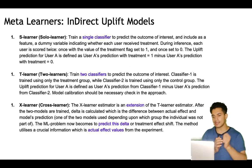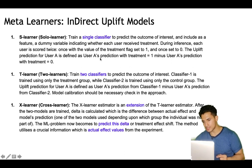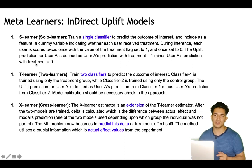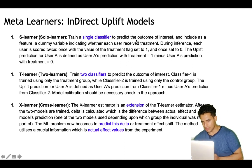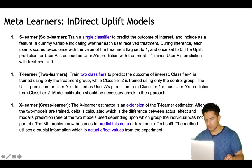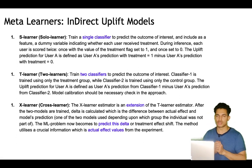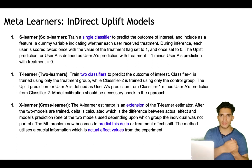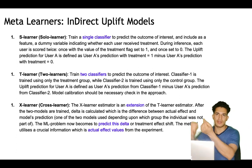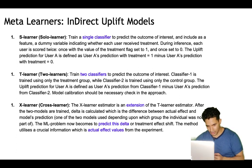During prediction time we make two predictions: one with the treatment flag equal to one (what is the target variable value when treatment=1) and one with treatment equal to zero. The uplift prediction for user A is defined as user A's prediction when treatment=1 minus user A's prediction when treatment=0. That's why it's called solo learner — there is one model with a dummy variable indicating treatment, and during prediction we set that flag to 1 or 0 and use the difference to find the uplift.